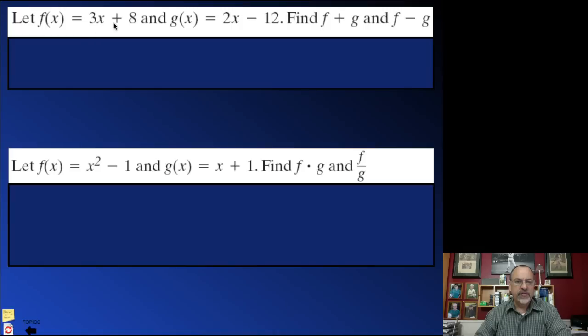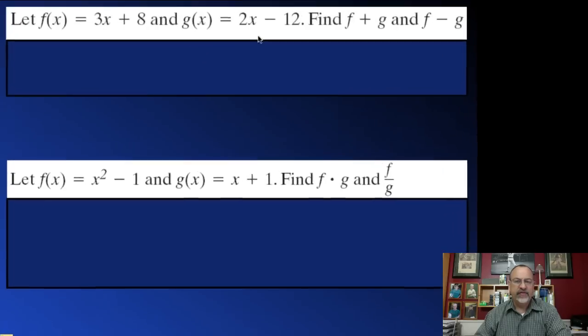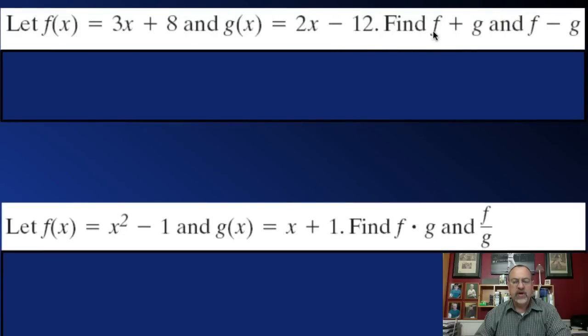If we had this f function 3x plus 8, and we had this g function 2x minus 12, what would be the f function plus the g function? That simply means you take the entire f function, which is 3x plus 8, and you add it to the entire g function, which is 2x minus 12.